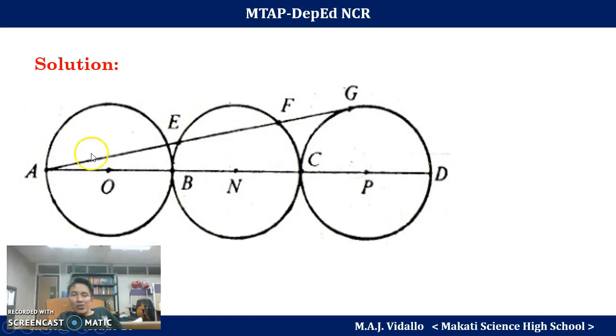Also, it was mentioned that this secant AG here intersects circle P at point G and that secant also intersects circle N at two points E and F. Our problem here is we are after the length of that chord EF. So to do that,